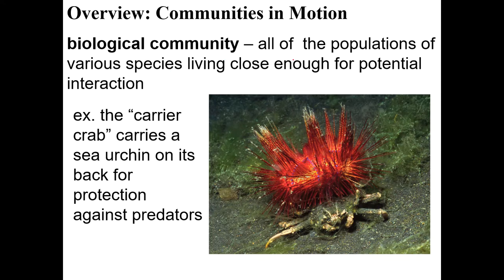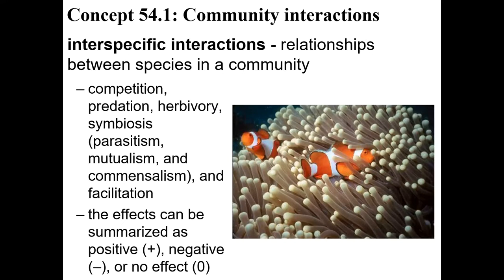A biological community is all of the populations of various species living close enough to interact with each other. Here's a sea urchin and a crab, and they're interacting with each other — the crab is actually carrying the sea urchin around. When we look at those kinds of interactions, we can define them in a few different ways, and that's what we're going to spend the rest of the chapter on. So let's define interspecific interactions — specific means species, and inter means between, so these are interactions between different species, such as between a clownfish and a sea anemone.